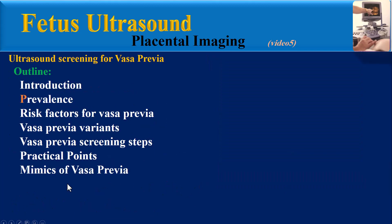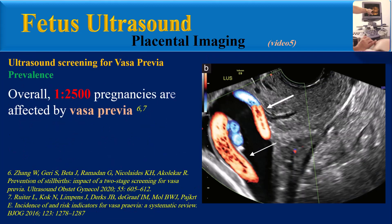The prevalence of Vasa Previa: overall, 1 per 2,500 pregnancies are affected by Vasa Previa.